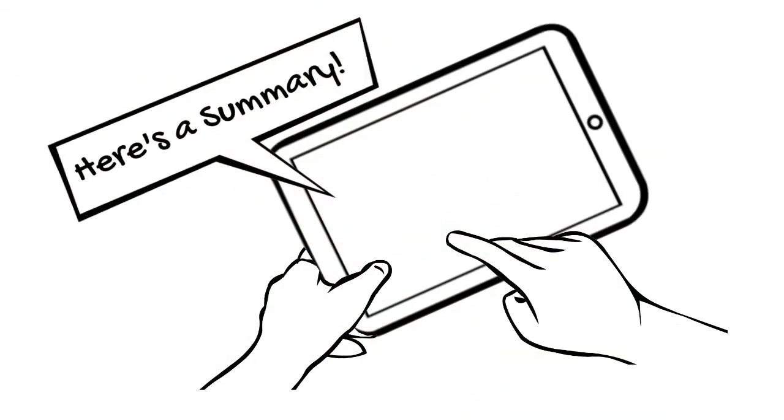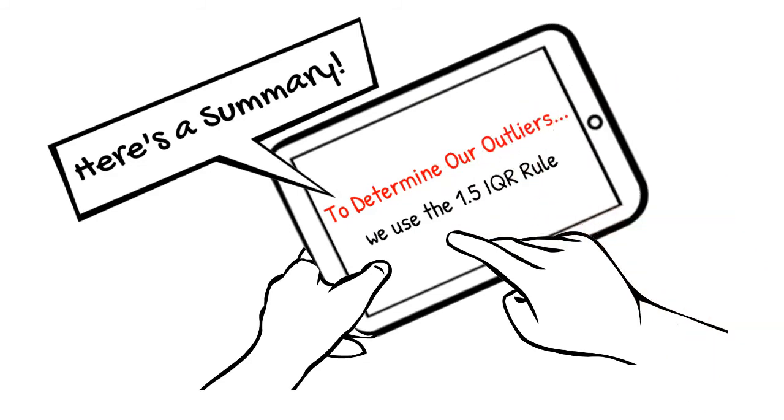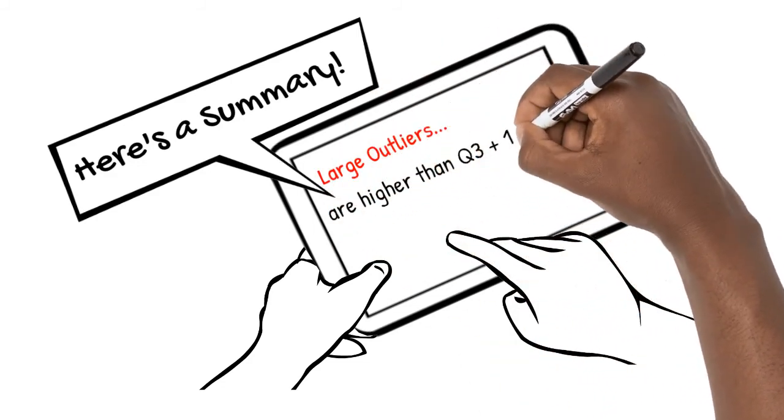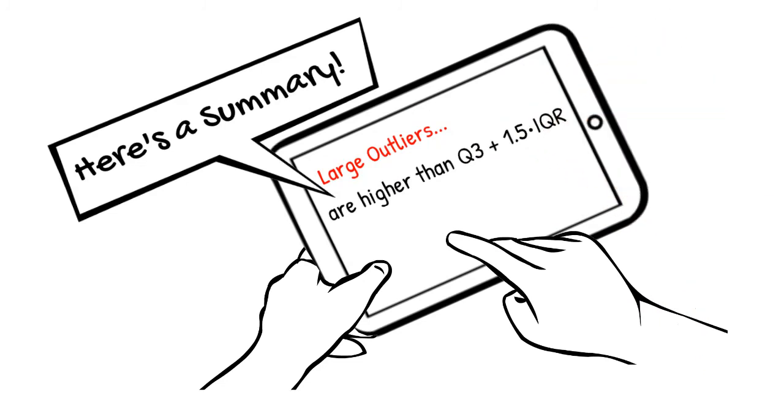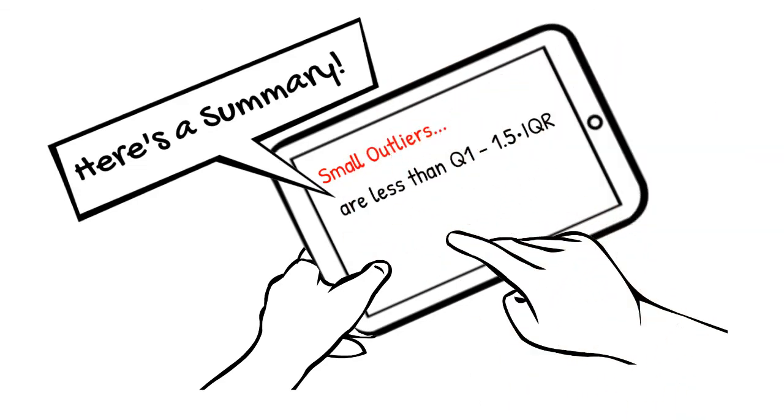Here's a summary of what we've learned. To determine our outliers, we use the 1.5 IQR rule. Large outliers are higher than the upper quartile plus 1.5 times the interquartile range. Small outliers are less than the lower quartile minus 1.5 times the interquartile range.